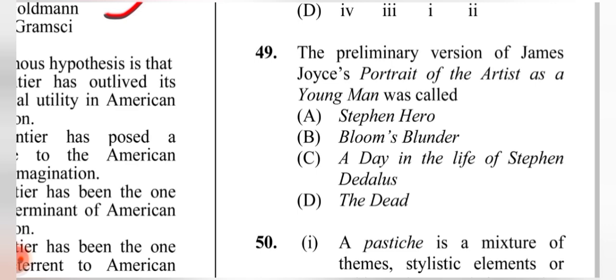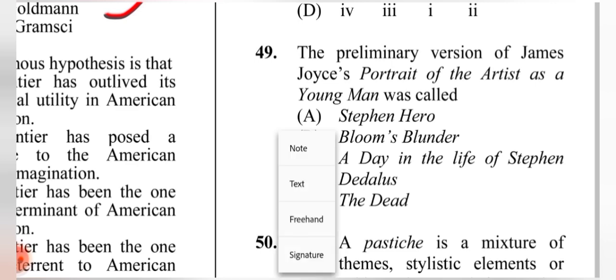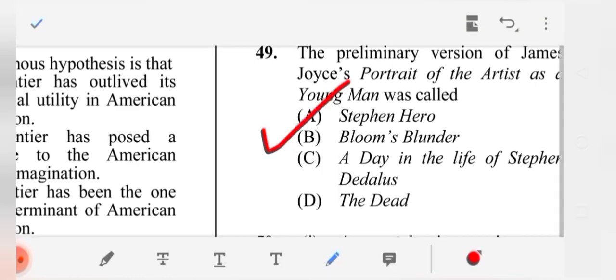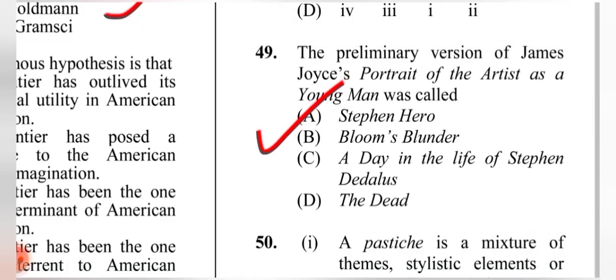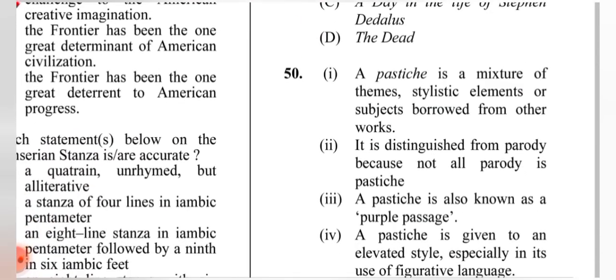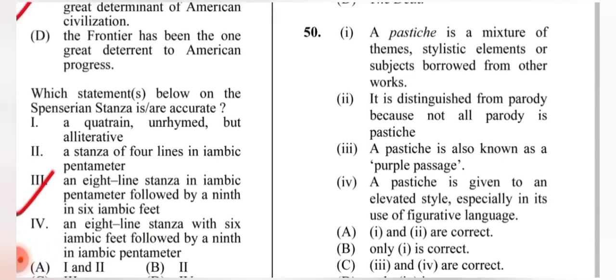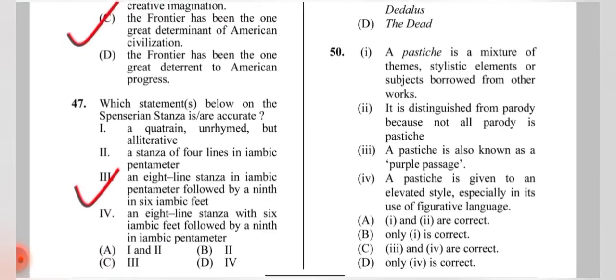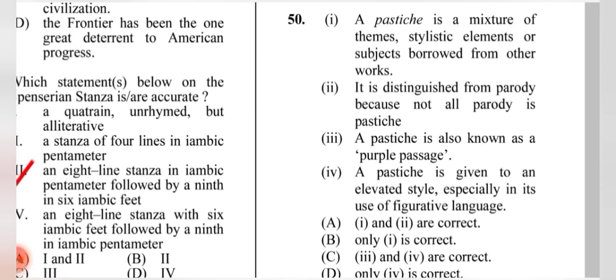Question 49: The preliminary version of James Joyce's 'Portrait of the Artist as a Young Man' was called (A) 'Stephen Hero.' Question 50: A pastiche is a mixture of themes, stylistic elements, or subject matter borrowed from other works; it is distinguished from parody because not all parody is pastiche. Options 1 and 2 are the correct answers.